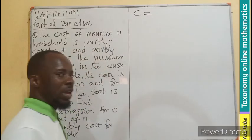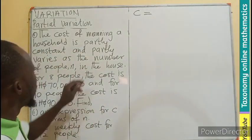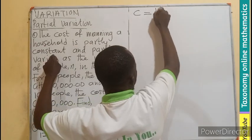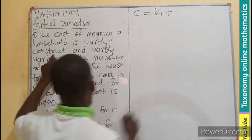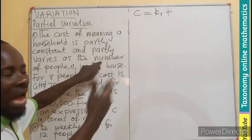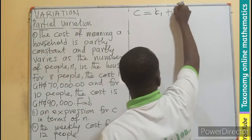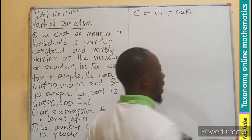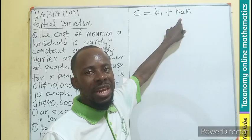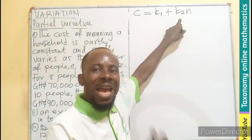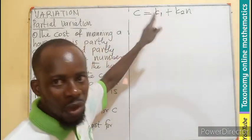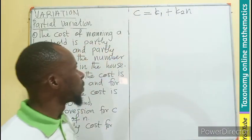We know it's a sum of two products. Partly a constant, so in this case I'll use k1, plus partly varies as the number, meaning directly as the number n times k2. We're using k1 and k2 to indicate the first constant and the second constant. This is the constant of variation and this is the fixed constant for partial variation.